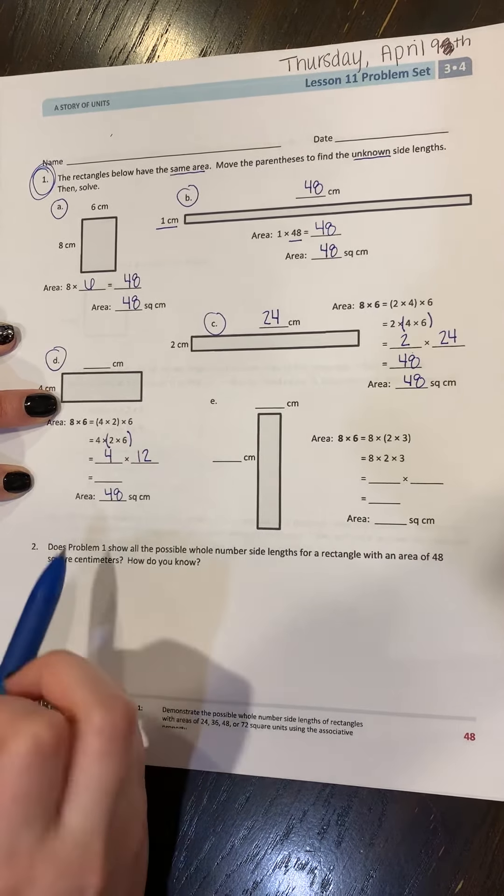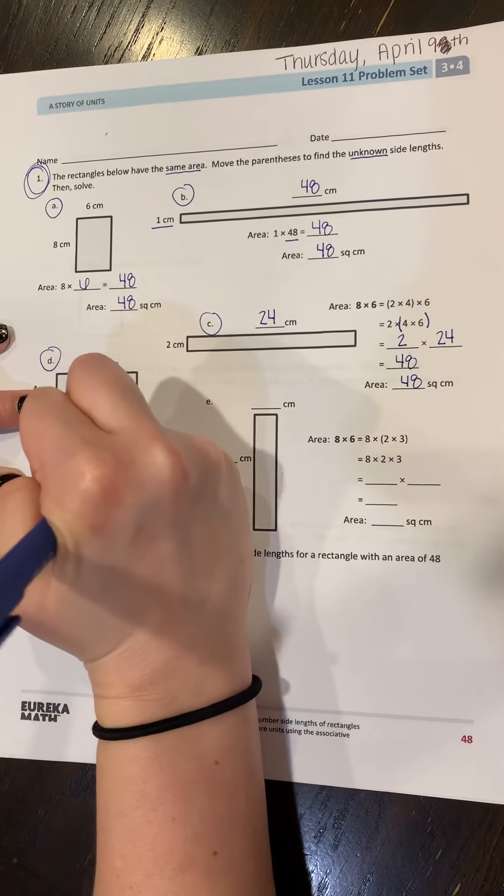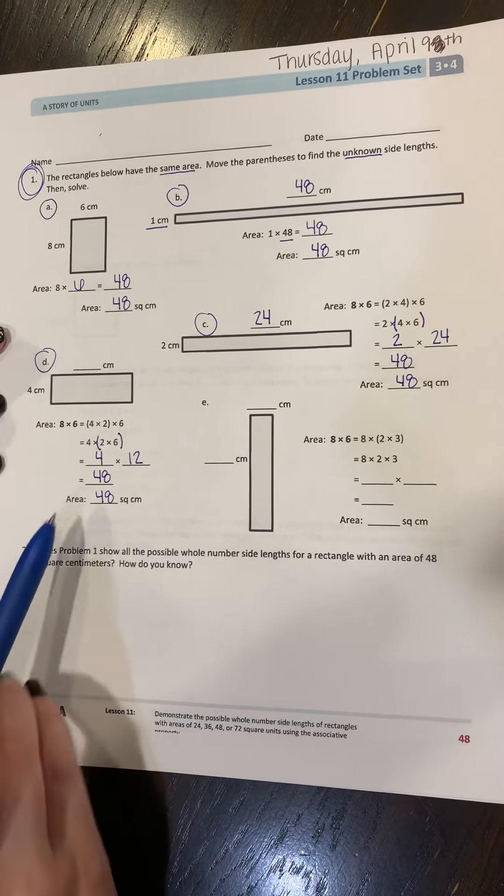So now I already know that four times 12 has to be 48 because they all have the same area. So if I look at my rectangle, I've got a side of four centimeters and I was looking for the other side. So we did four times 12, which means this missing side has to be 12 centimeters.